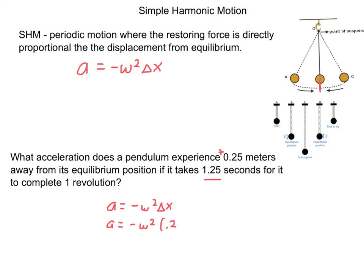I do know delta x — it's positive 0.25 meters away. I need to figure out the angular frequency to calculate the acceleration. I was told the period: 1.25 seconds — that's how long it takes for the pendulum to coast all the way to one side and back. From the period I can get to the angular frequency. Remember: 1 over the period is the frequency, and angular frequency is 2 pi times that frequency.